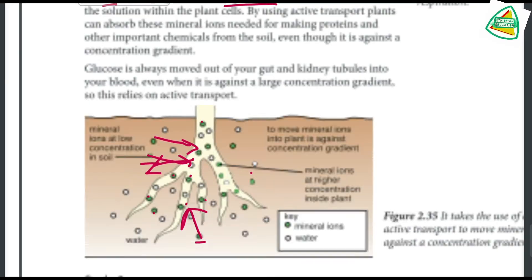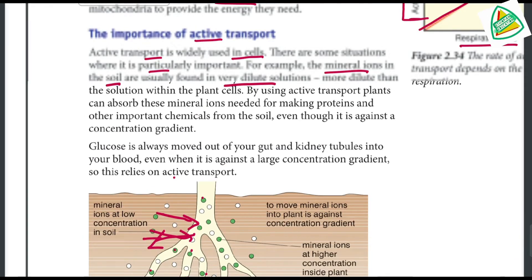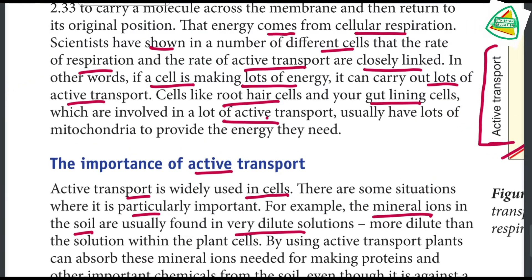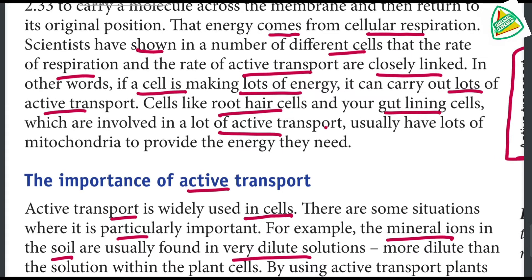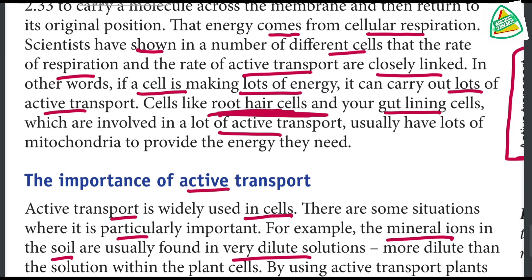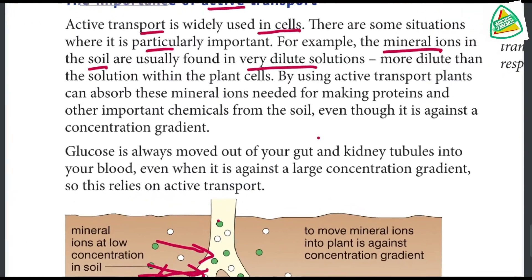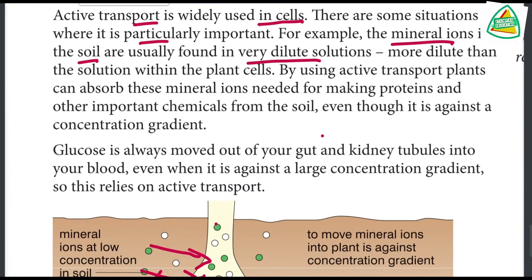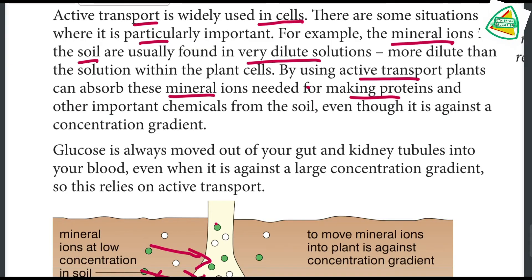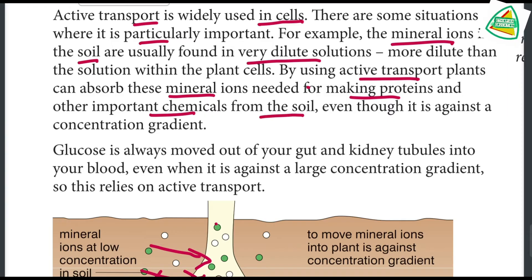Root hair cells use active transport to absorb mineral ions from the soil. By using active transport, plants can absorb these minerals — needed for making proteins and other important chemicals — from the soil, even though it is against the concentration gradient.